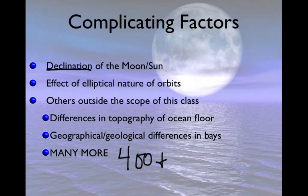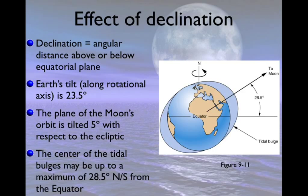The first complicating factor we're going to talk about is declination. The definition is: it's the distance above or below the equatorial plane.